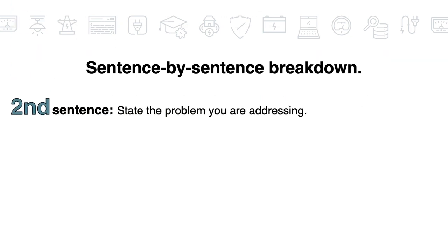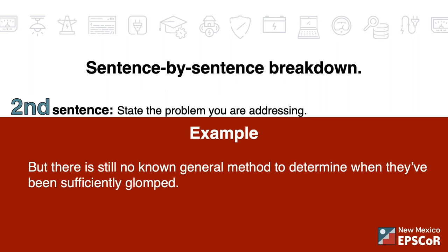Second sentence: state the problem you're addressing. What's the research question? For example: 'But there's still no known general method to determine when they have been sufficiently glomped.'